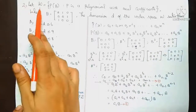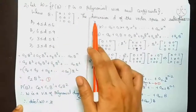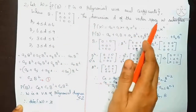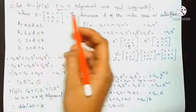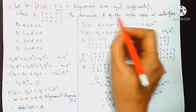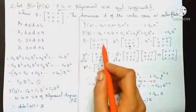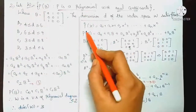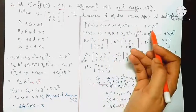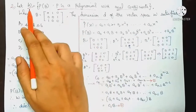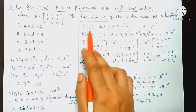Second question. Let W equal to P of B, where P is a polynomial with real coefficients, and B is a given matrix. The dimension D of the vector space W satisfies what condition? P of B is a polynomial in B.